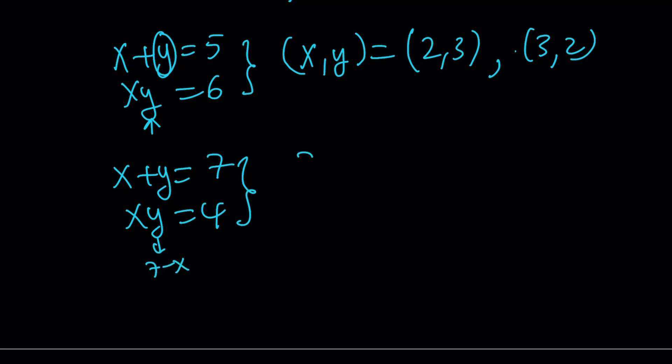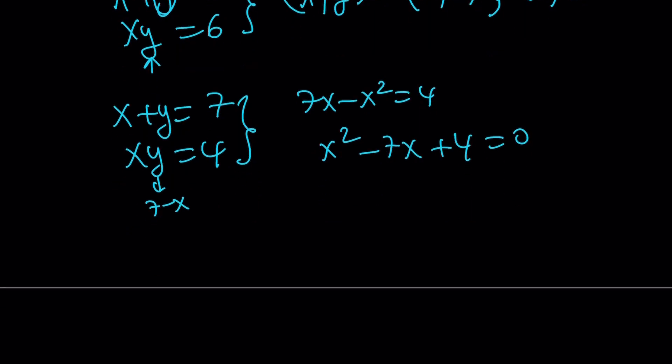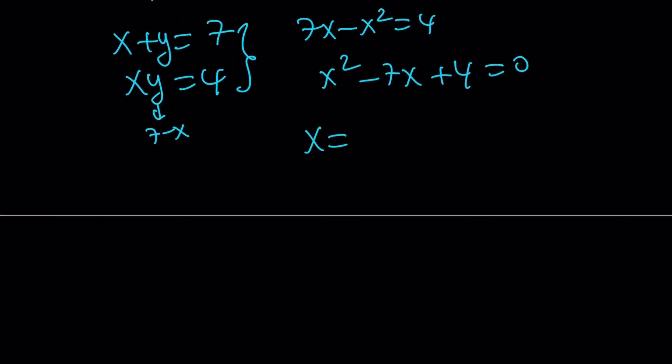And this becomes 7x - x² = 4. Or x² - 7x + 4 = 0. And from here I get the following solutions. x = (7 ± √33)/2.